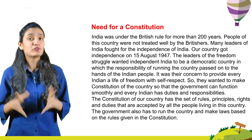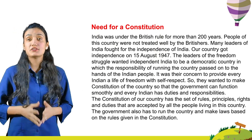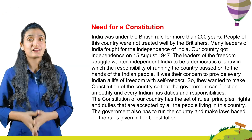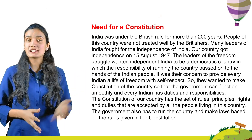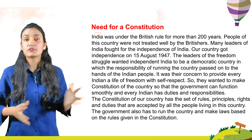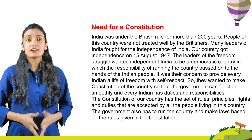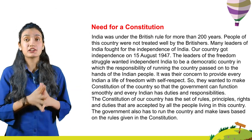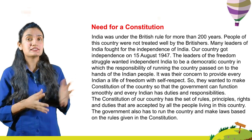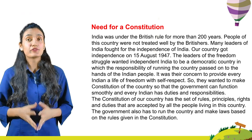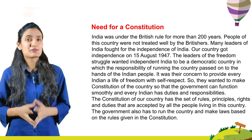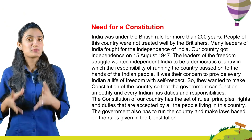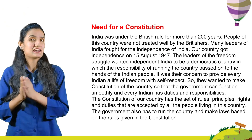India was under British rule for more than 200 years. People of this country were not treated well by the British. Many leaders of India fought for the independence of India. Our country got independence on 15th August 1947. The leaders of the freedom struggle wanted independent India to be a democratic country in which the responsibility of running the country passed on to the hands of the Indian people. It was their concern to provide every Indian a life of freedom with self-respect. So they wanted to make a constitution of the country so that the government can function smoothly and every Indian has duties and responsibilities.